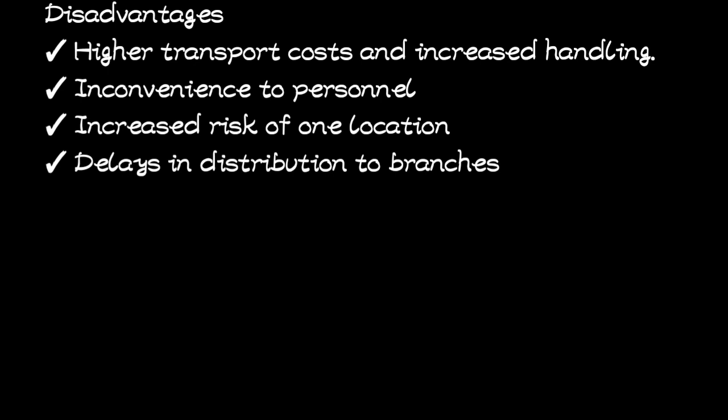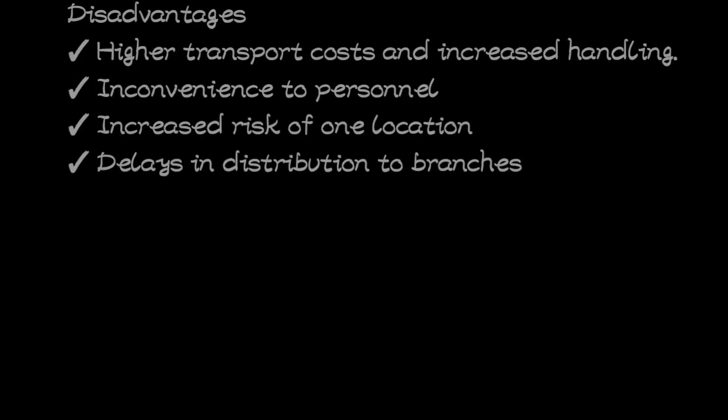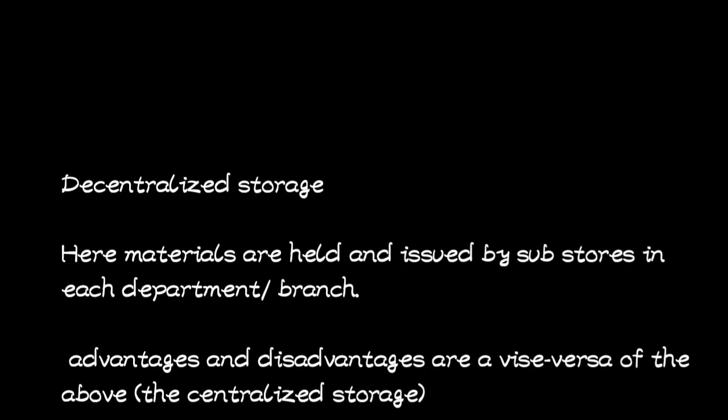There is also an increased risk associated with having one location — like putting all your eggs in one basket. If something happens to that location, everything is gone. Additionally, there can be delays in distribution to branches because of the distance involved. That covers centralized storage.